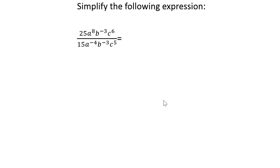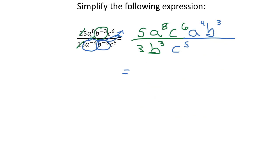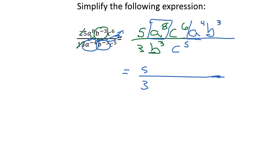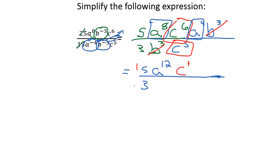Here is one more to work out — pause the video and press play when ready. For this one, 25 and 15 were both divisible by 5, giving 5 over 3. Negative exponents were moved either from top to bottom or bottom to top. On top, a to the 8th and a to the 4th are added to give a to the 12th. c to the 6th on top and c to the 5th on the bottom subtract to give c to the 6 minus 5, or c to the first. b to the third cancels top and bottom, leaving 5 a to the 12th c to the first all over 3.